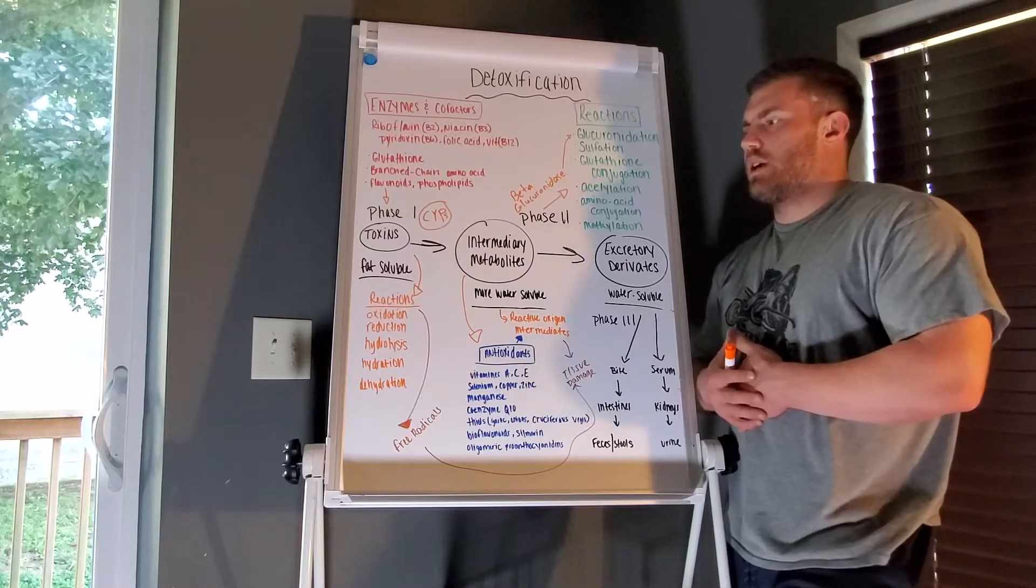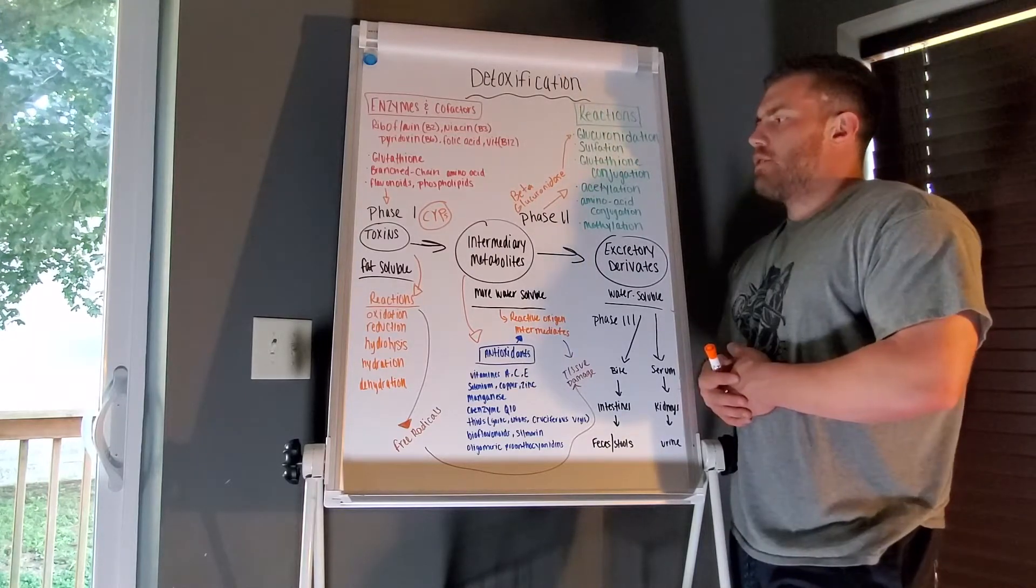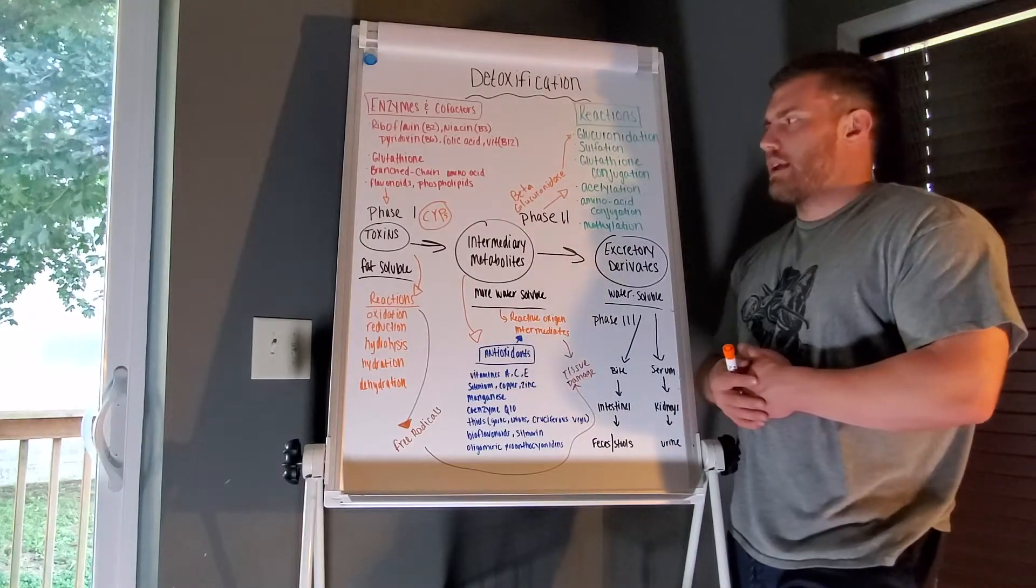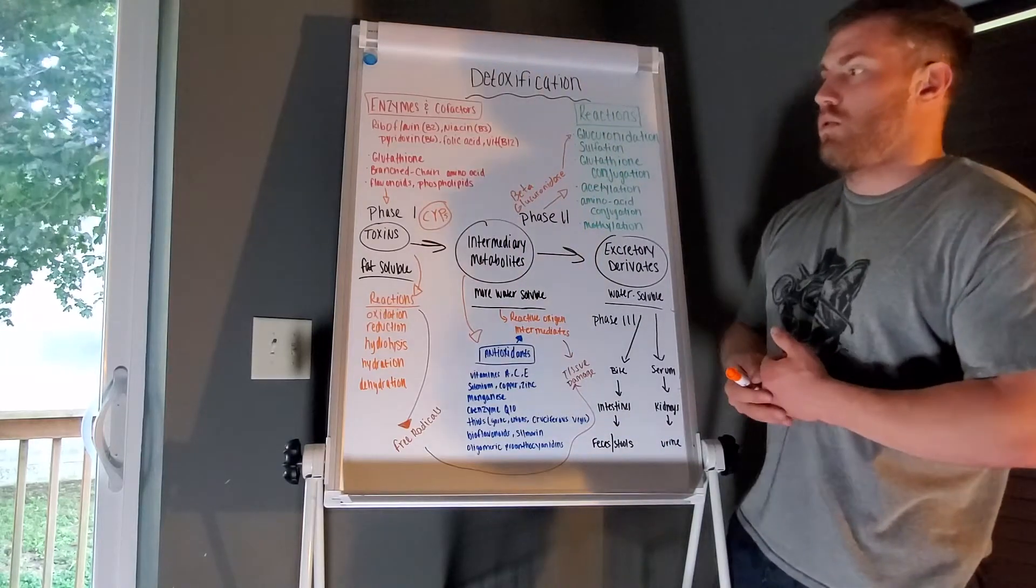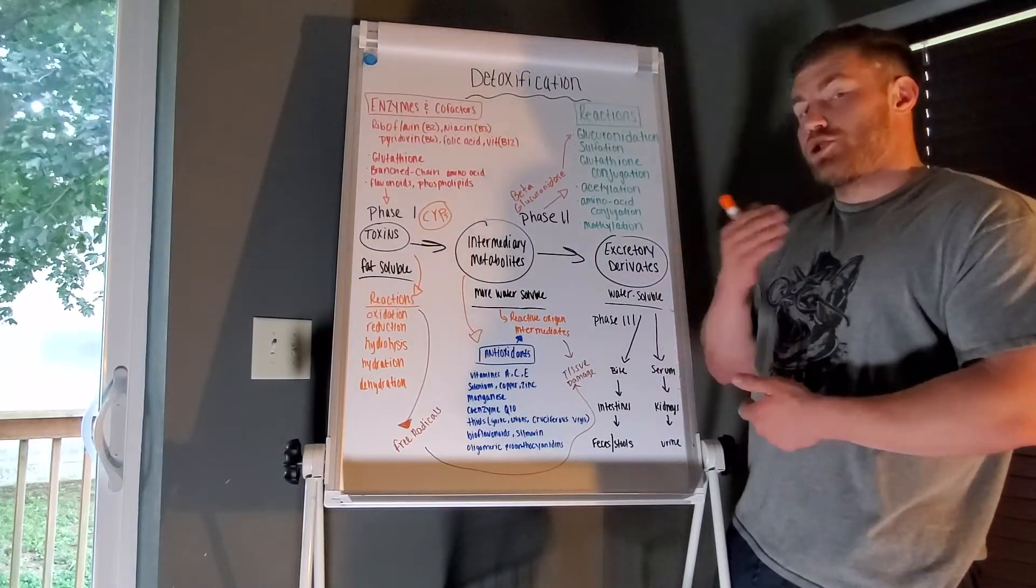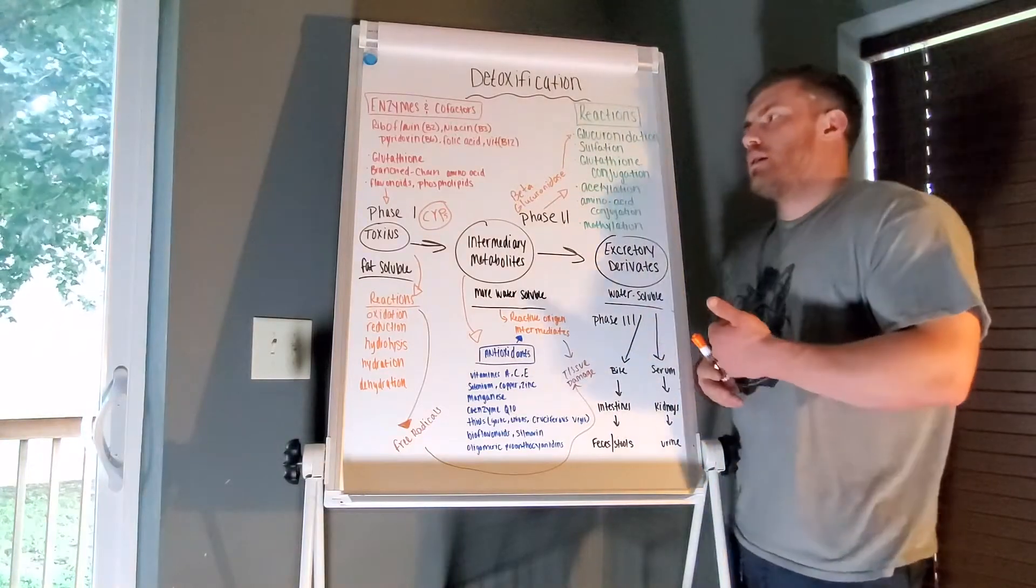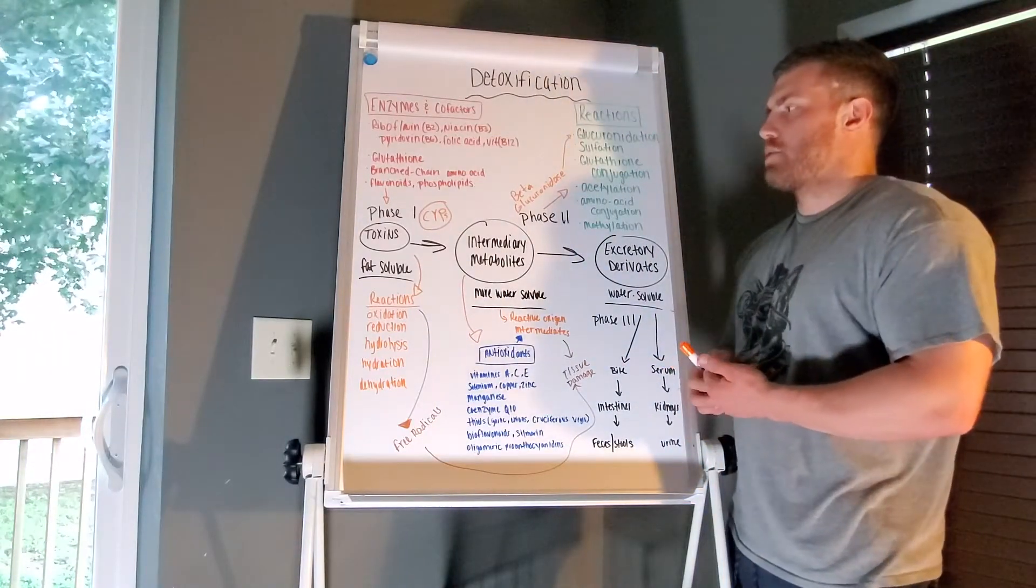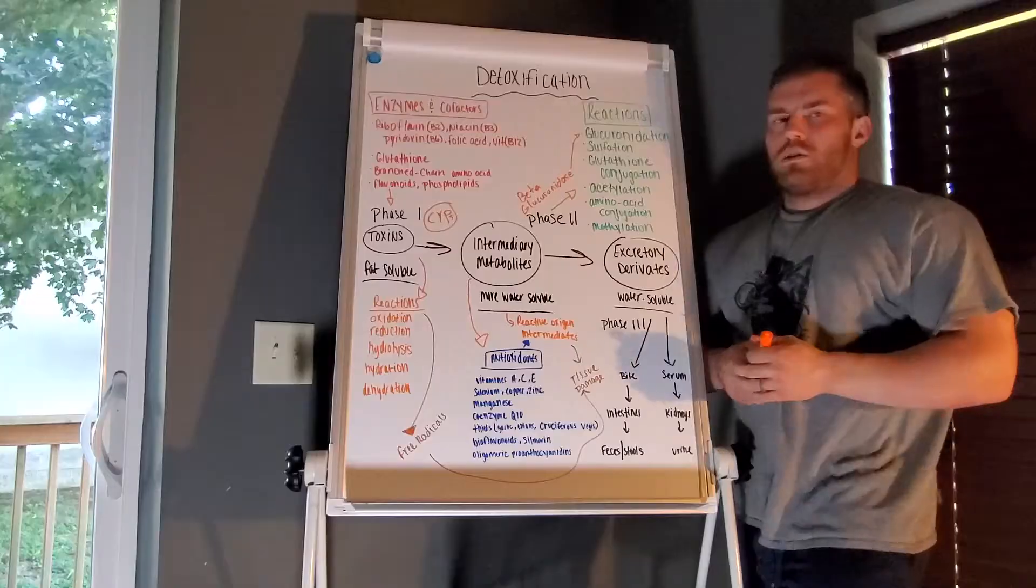Many of you know that beta-glucuronidase is responsible for a lot of this estrogen recirculation that we see in estrogen dominance. This is actually produced by gut bacteria.